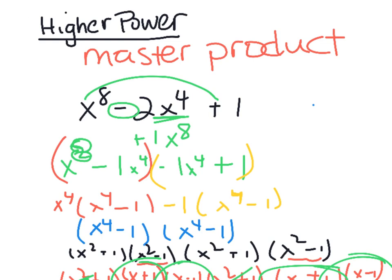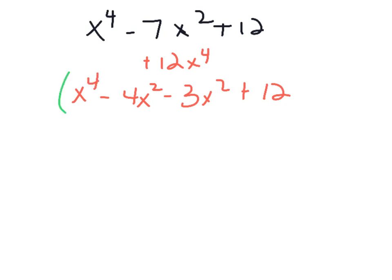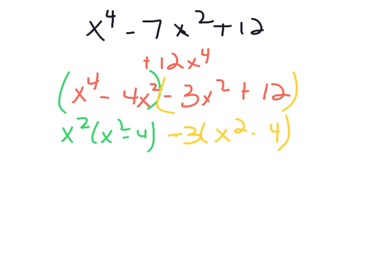Example 2: x⁴−7x²+12. Multiply first times last: +12x⁴. Find two numbers that multiply to 12 and add to 7: that's 4 and 3. Both are −x² (same sign, negative) to give −7x². Factor by grouping: GCF of first group is x², giving x²(x²−4); GCF of second group is −3, giving −3(x²−4). Factors so far: (x²−3)(x²−4).